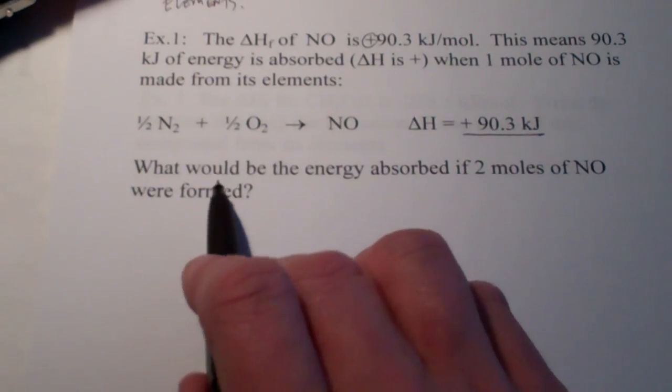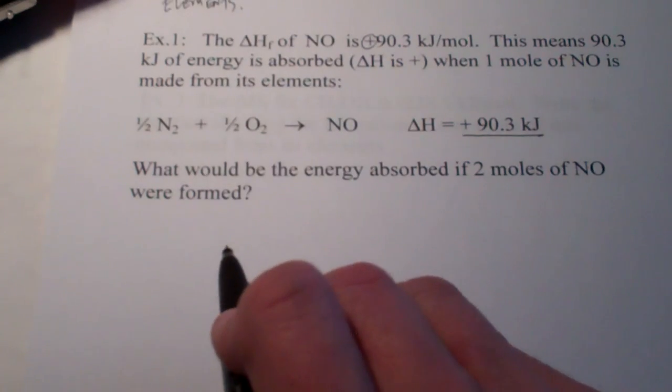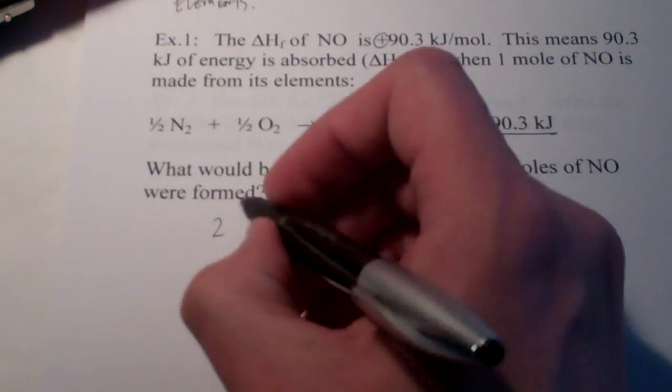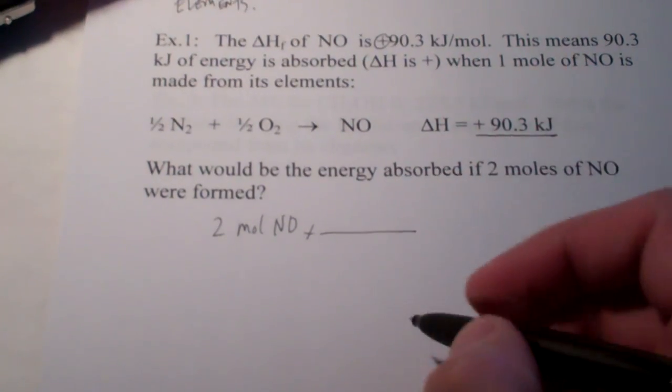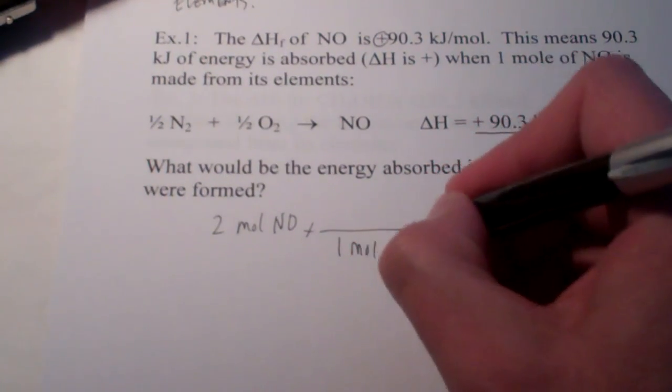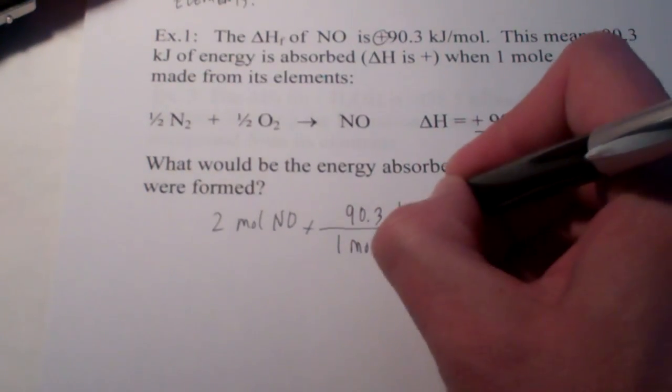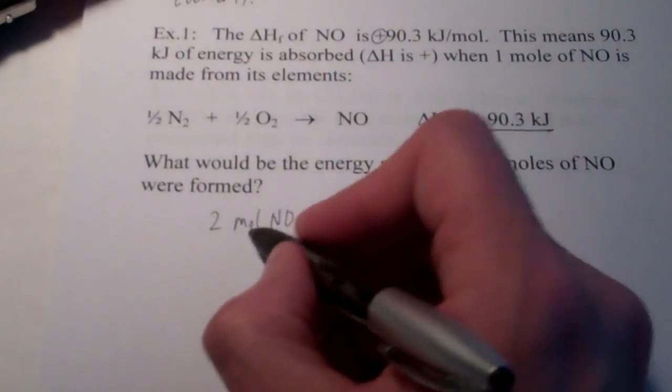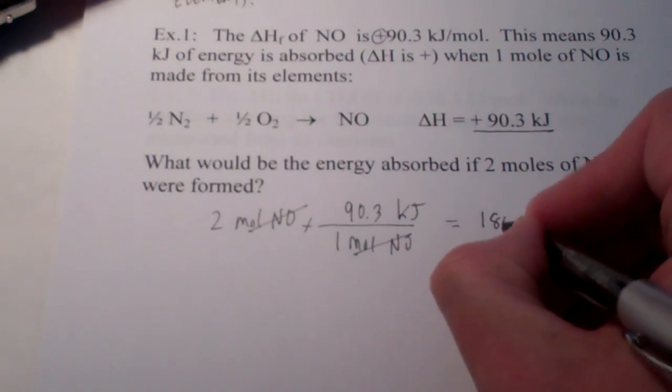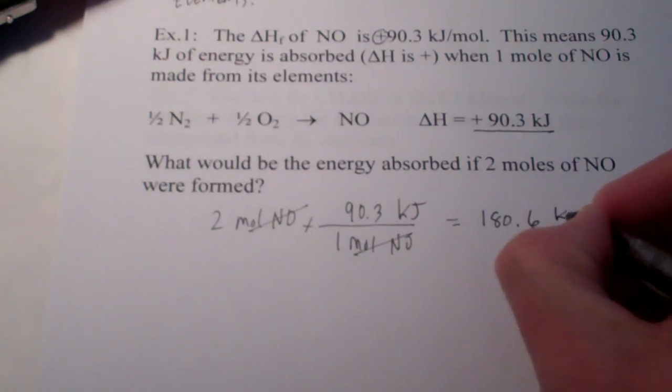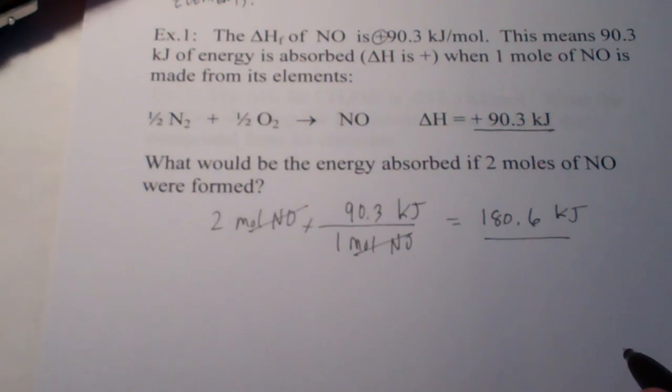So, next question. What would be the energy absorbed if two moles of NO were formed? That's not a big deal. We have two moles of NO being formed. And, don't we know, one mole of NO requires 90.3 kilojoules of energy. So, two moles would require 180.6 kilojoules. Okay? Pretty straightforward.